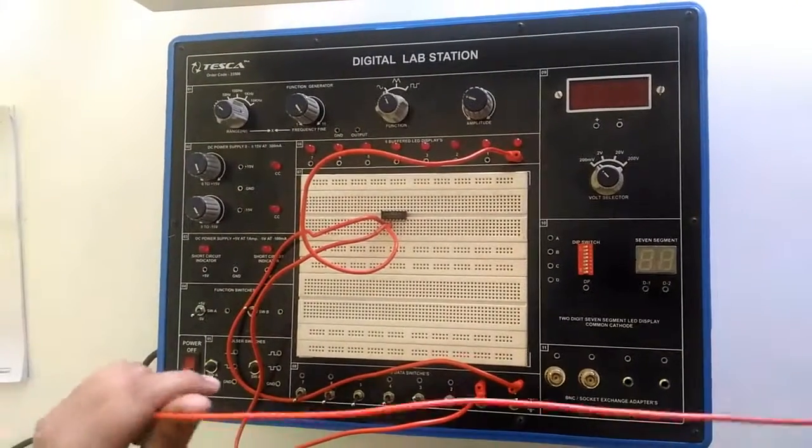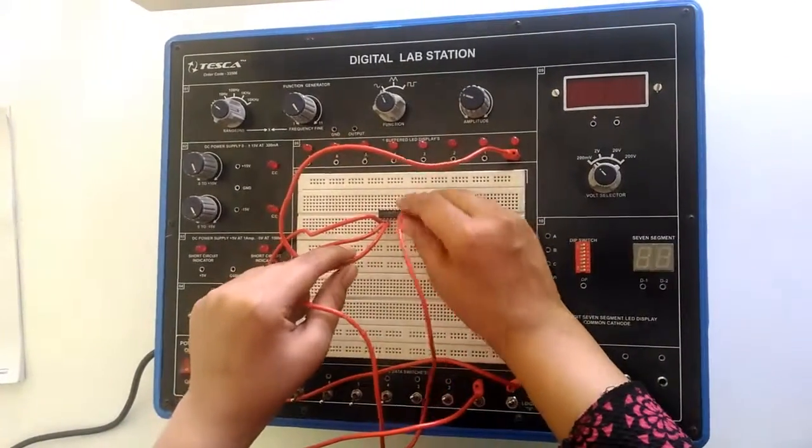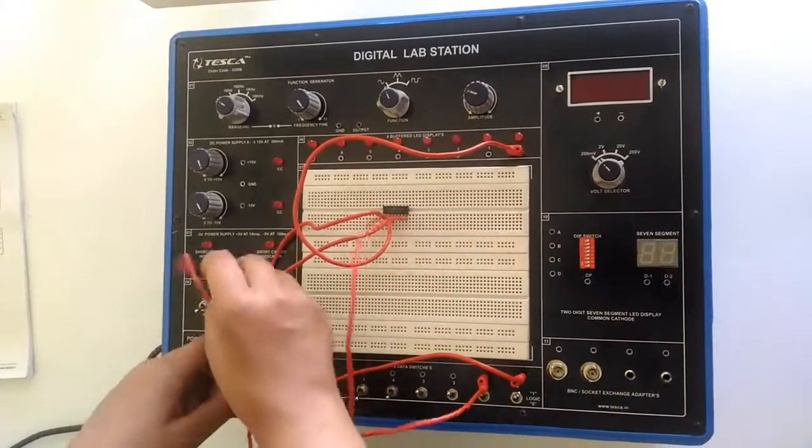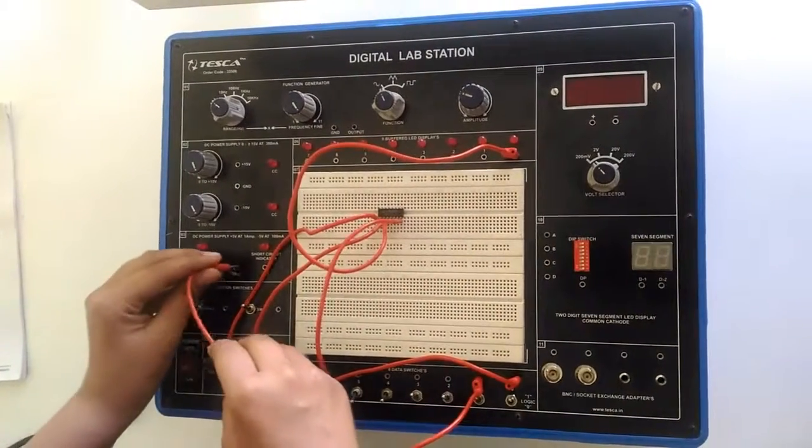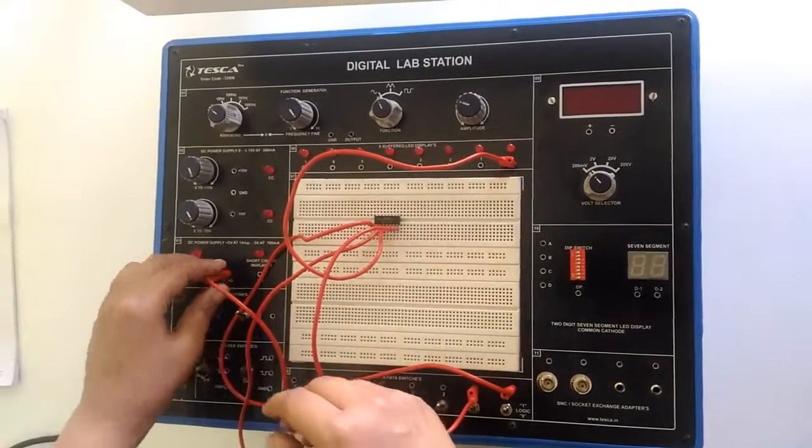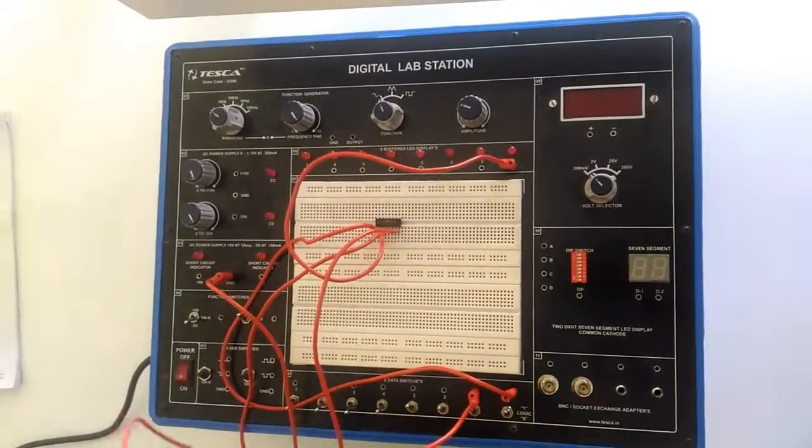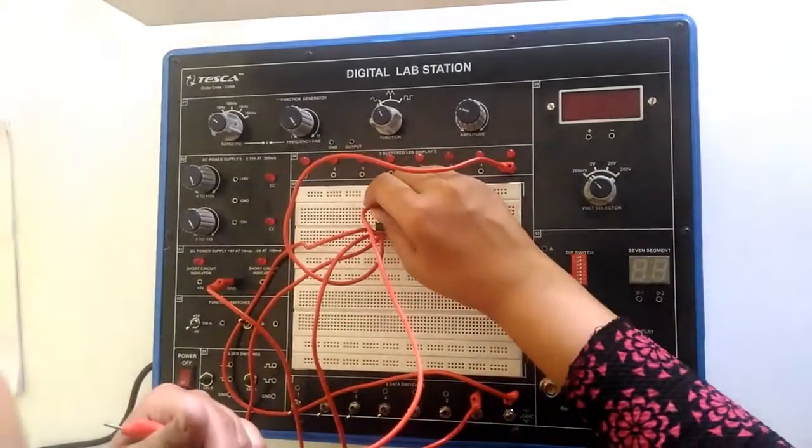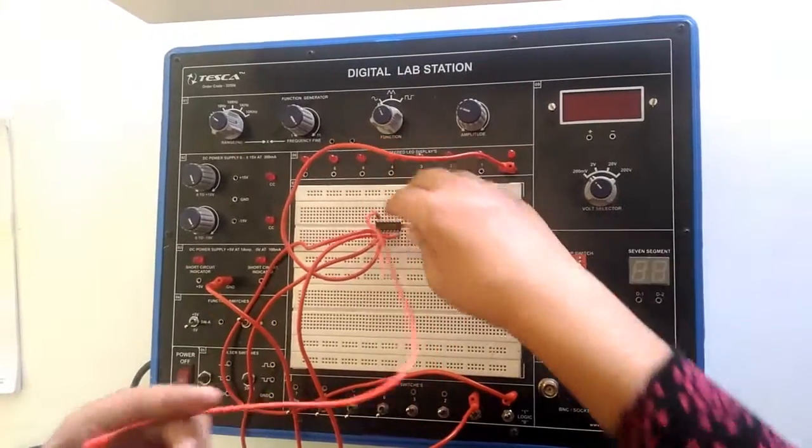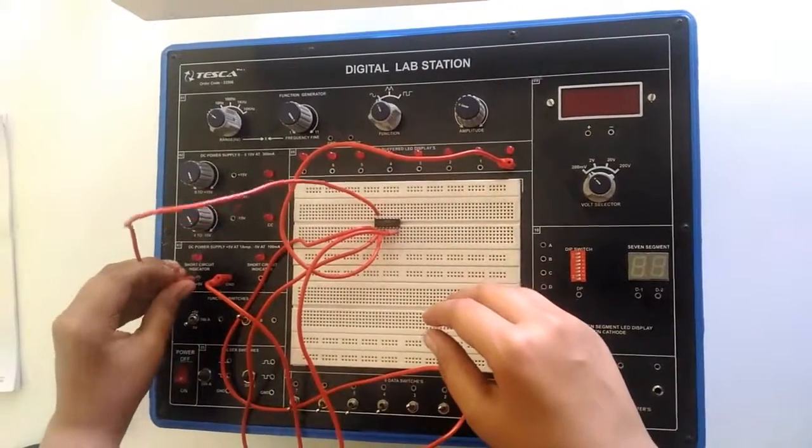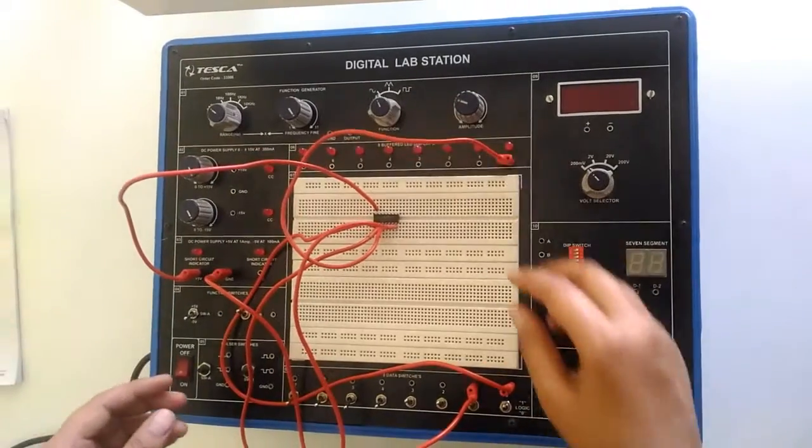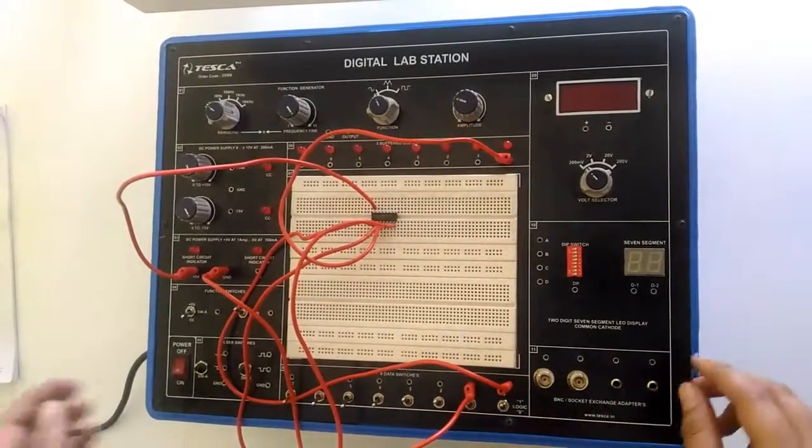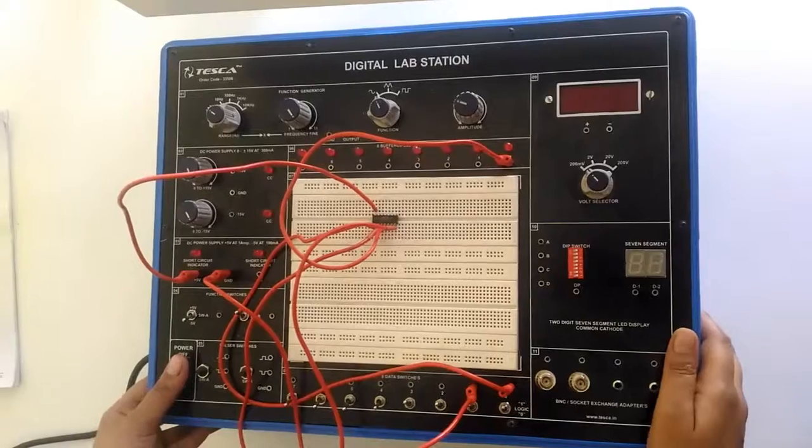Now, ground it on the seventh pin. You can provide the ground from here, DC power supply and provide the 5 volts power supply at the 14th pin. You can consult the truth table from the lab manual. Now, I am switching on the power.